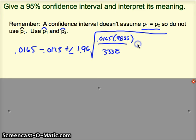P-hat 2, 0.0125, times 1 minus that, 0.9875, divided by that sample size. And again, use the two proportions interval on your calculator, be smart, don't do this by hand.